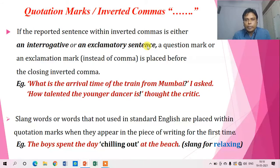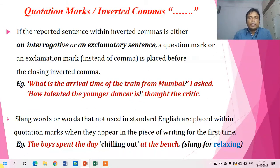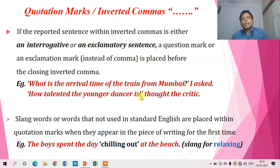Similarly for an exclamatory sentence: inverted-comma How talented the younger dancer is! inverted-comma, thought the critic. This is an exclamatory sentence and at the end of the exclamatory sentence we place an exclamation mark. After this exclamation mark, the closing single inverted comma is placed. The important point is that before ending the quotation mark, we always place a question mark or exclamation mark as appropriate.